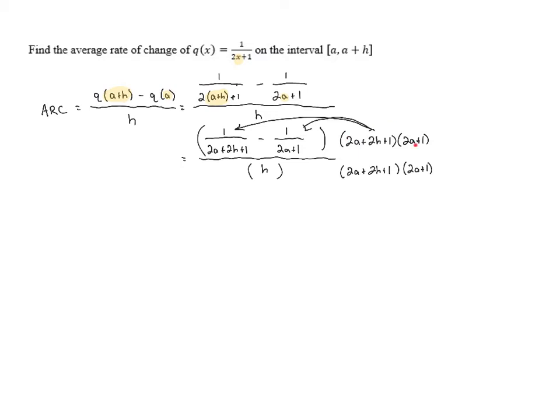So we need to distribute this to each of the two fractions. In the first fraction, the 2a plus 2h plus 1s will cancel, and that leaves us with 1 times 2a plus 1, which gives us 2a plus 1. Then we are subtracting the product that we get next.